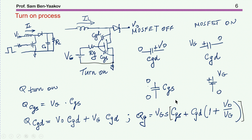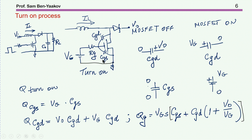This is very similar to the Miller effect in an amplifier — a capacitor between output and input in a negative feedback amplifier. You can look at this as a gain factor: the gate changed from zero to VG while the drain changed from V_out to zero. This ratio is the effective gain during switching, which is why this is referred to as the Miller effect.